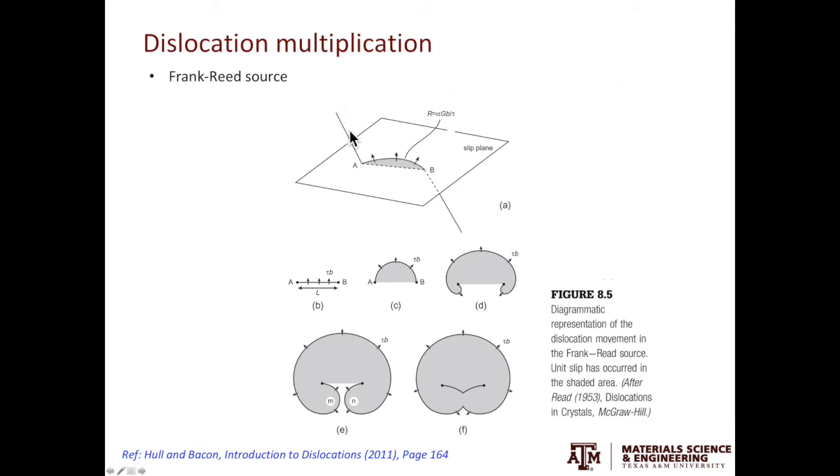We have the dislocation line here. And only this part lies on the glide plane, while the parts outside, they are outside the glide plane, so they are sessile. Since the points A and B are pinned, the dislocation segment between A and B can bow out. And the points A and B can act as a dislocation source for multiplication called the Frank-Reed source.